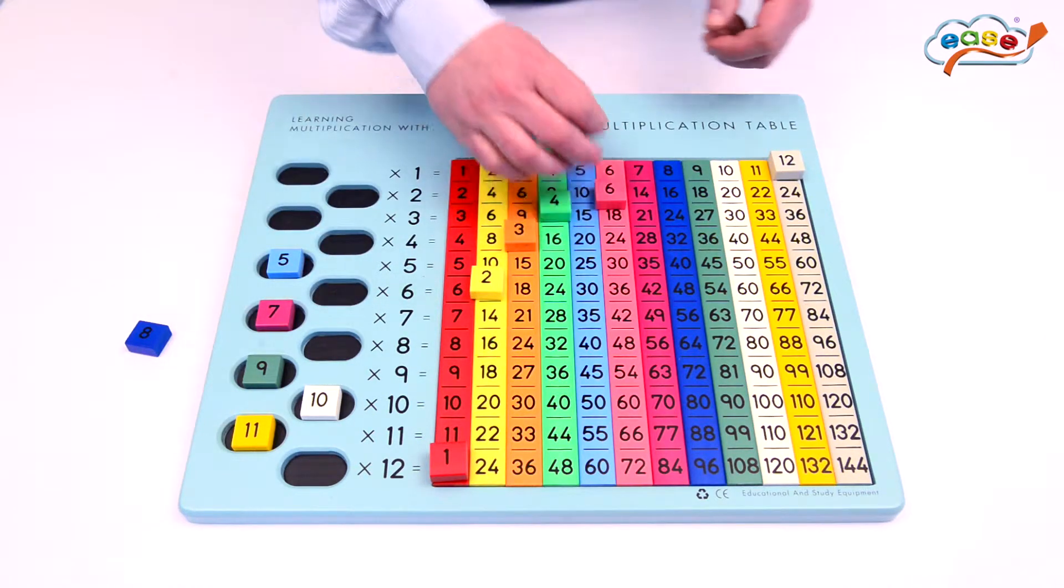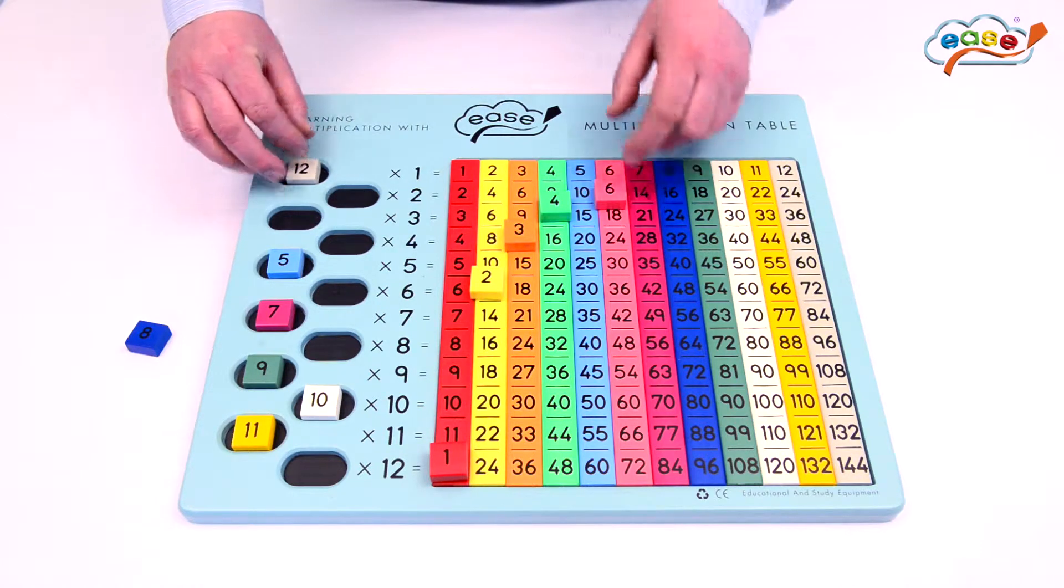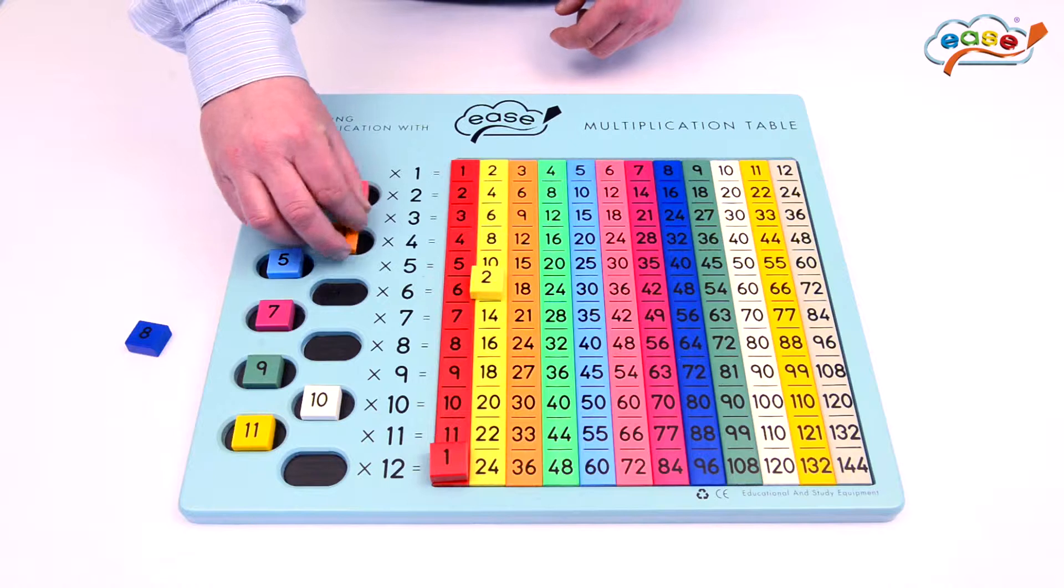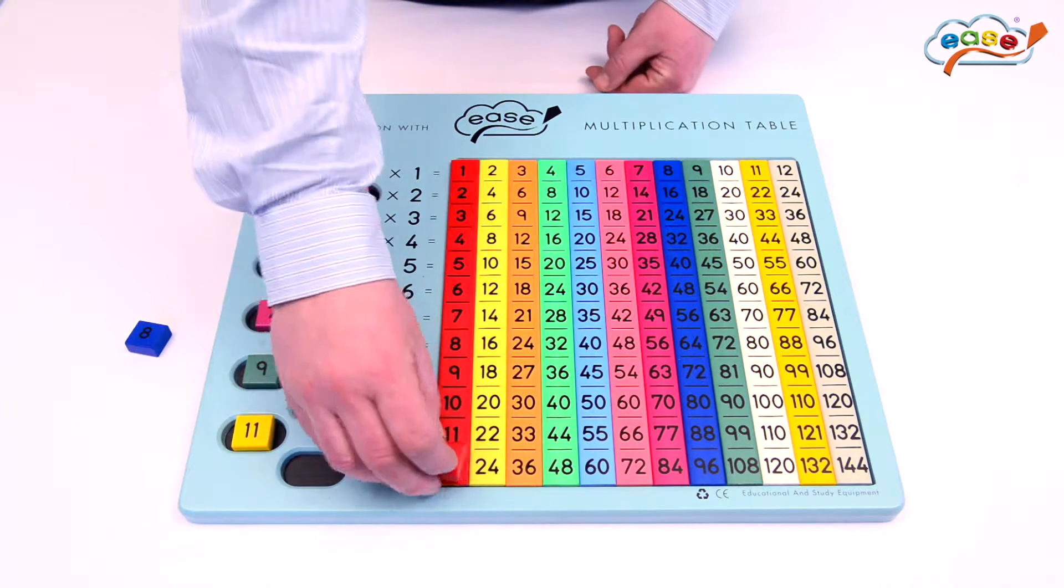So for example, here we can start to see how 12 1's make 12, 6 2's make 12, 4 3's, 3 4's, 2 6's, and 1 12.